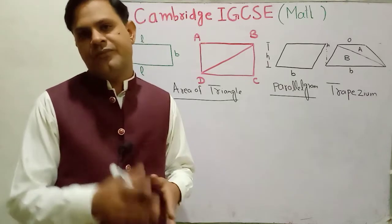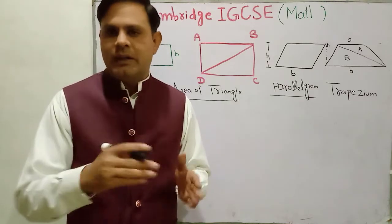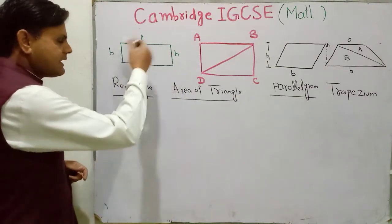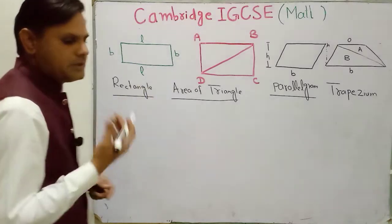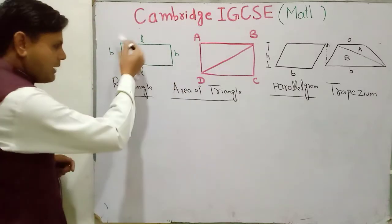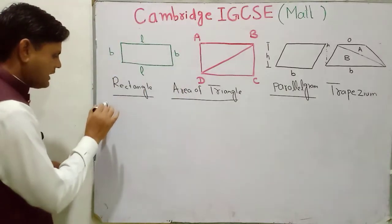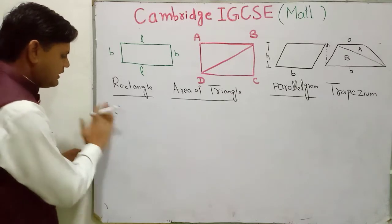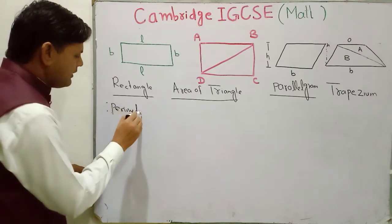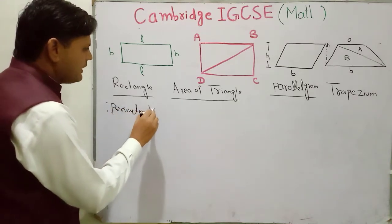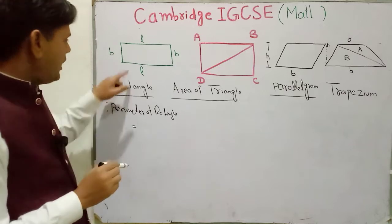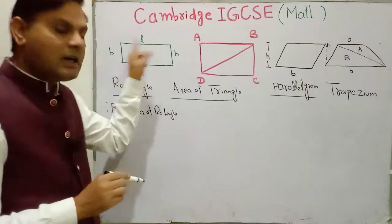First I tell you what is a perimeter. Perimeter is the outer length of a rectangle. A rectangle is a shape in which opposite sides are equal in length. So the perimeter of this shape — the rectangle — can be written like this.